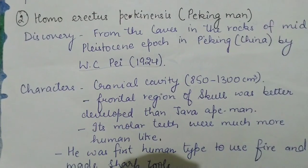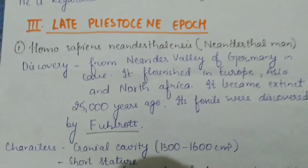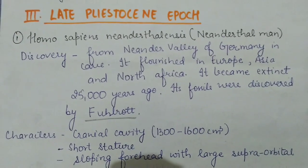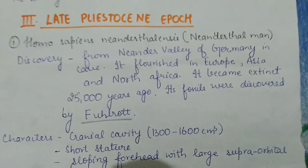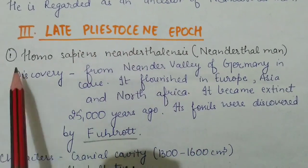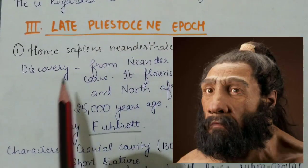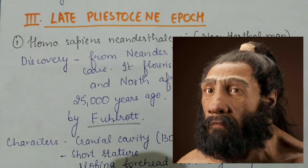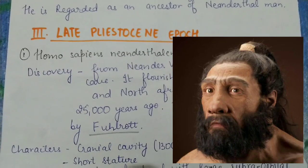As the middle Pleistocene Epoch ended, many other human types came — like Heidelberg Man and chinless man. Then came the late Pleistocene Epoch. In late Pleistocene Epoch we will study three human types: Homo sapiens neanderthalensis, Homo sapiens fossils, and Homo sapiens sapiens.